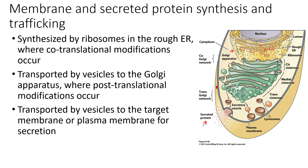In the rough endoplasmic reticulum, this is where some co-translational modifications are started — for example, N-glycosylation. While the protein is still being translated by the ribosome into the ER, there are other enzymes inside the ER that are starting to attach particular modifications. Editing also begins in the rough ER.